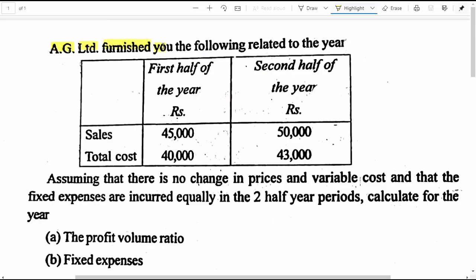AG Limited furnished you the following data related to a particular year. The first half of the year column shows sales of 45,000 and cost of 40,000 rupees. Regarding the second half of the year, sales amounted to 50,000 and cost amounted to 43,000 rupees.